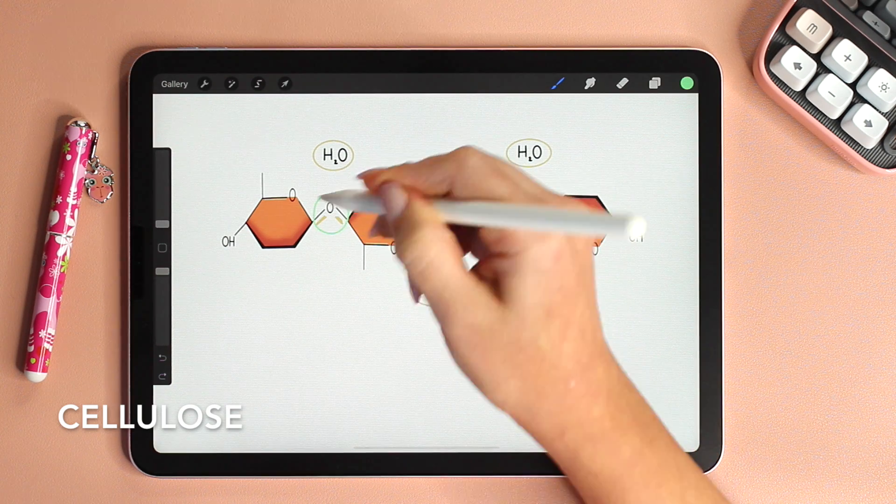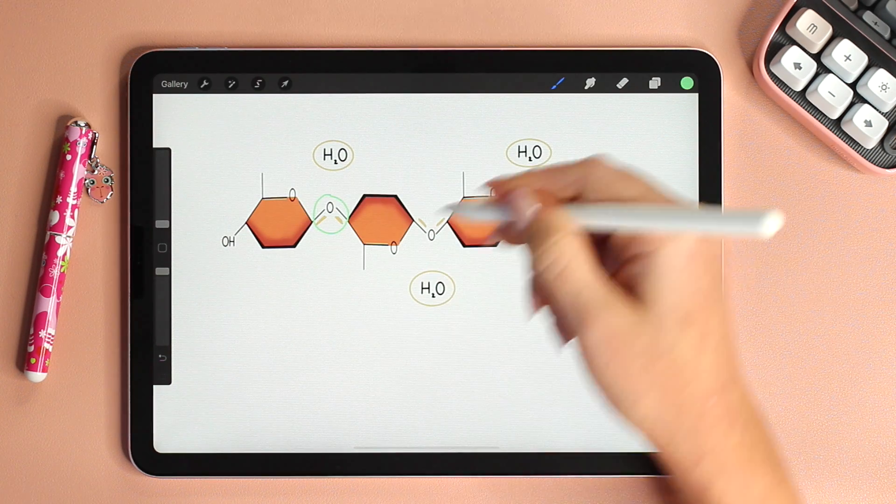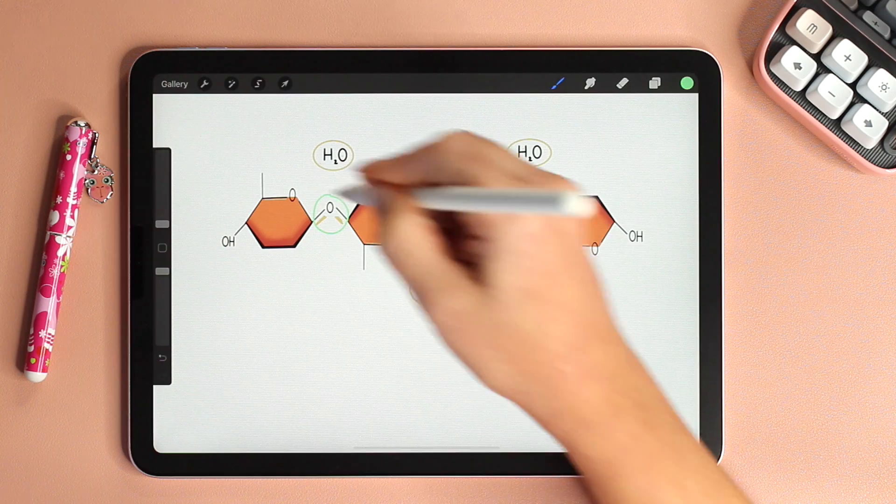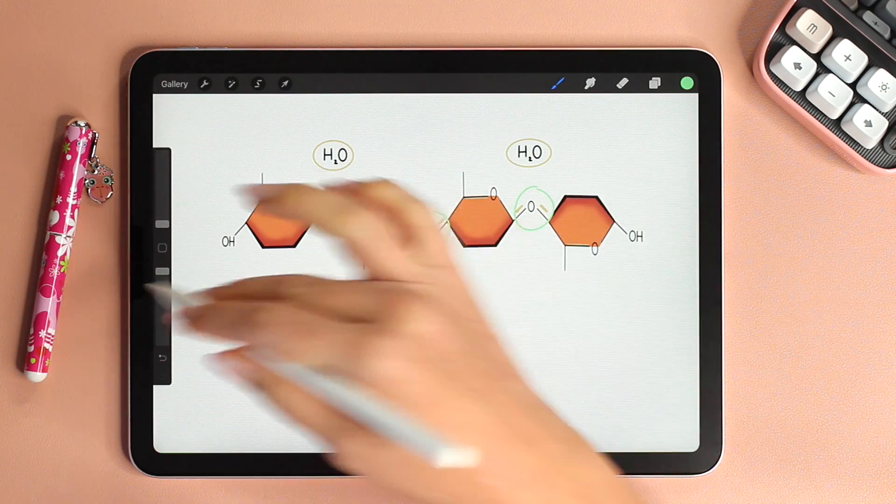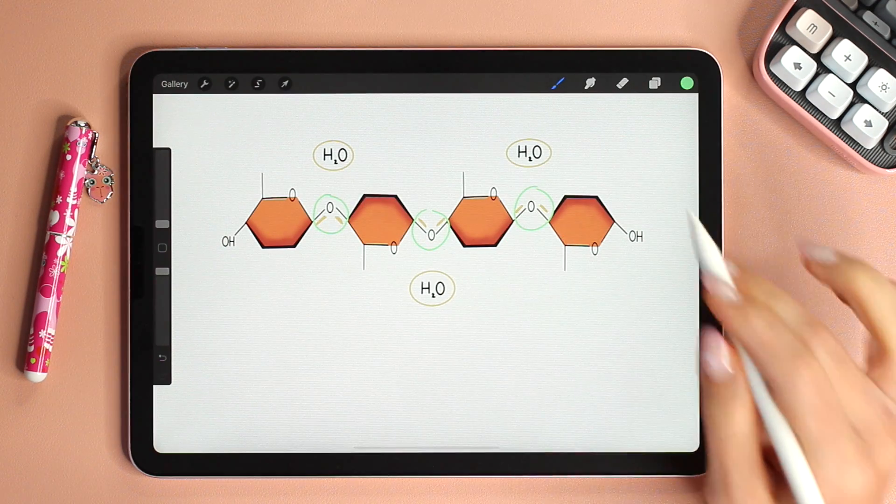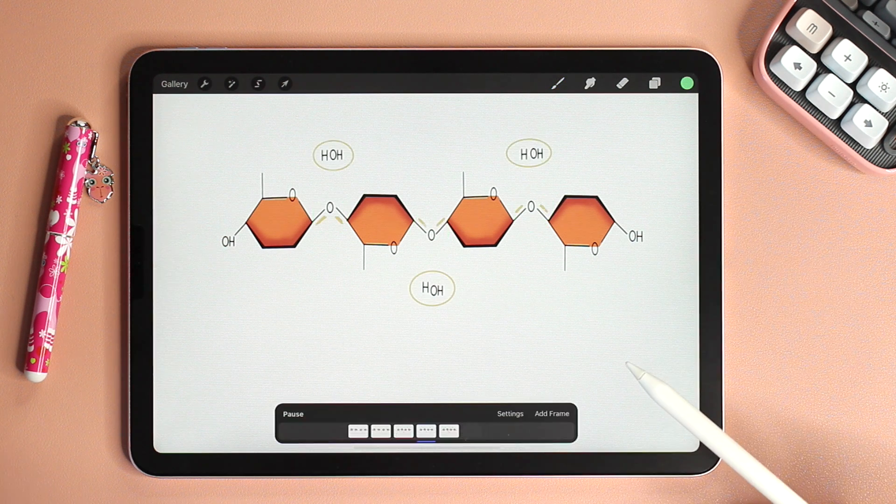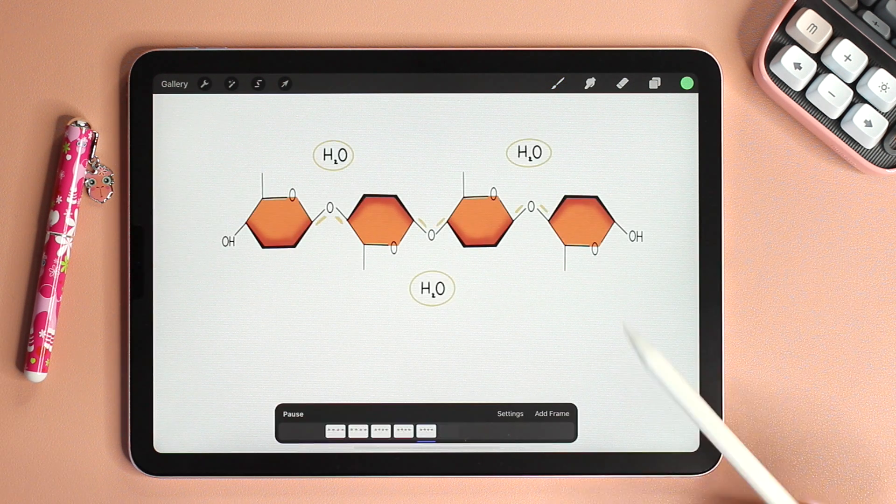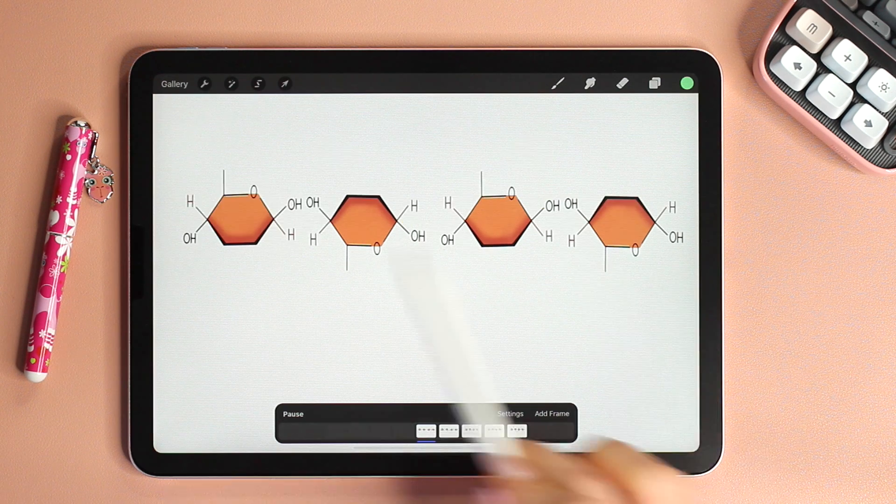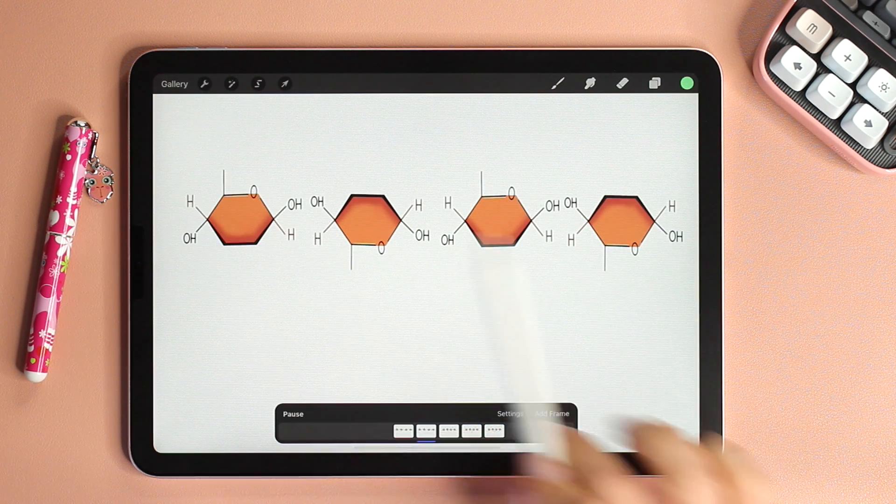And note how the glycosidic bonds in cellulose alternate in direction upward downward upward. And this is a characteristic difference between cellulose and starch. And this is a quick animation showing beta glucose monomers condensing to form cellulose.